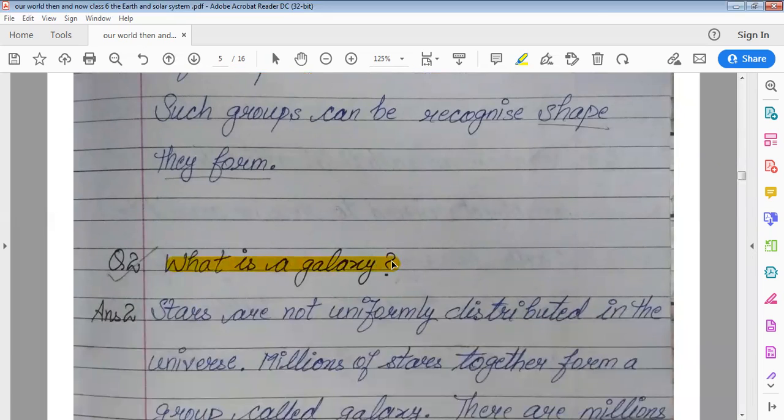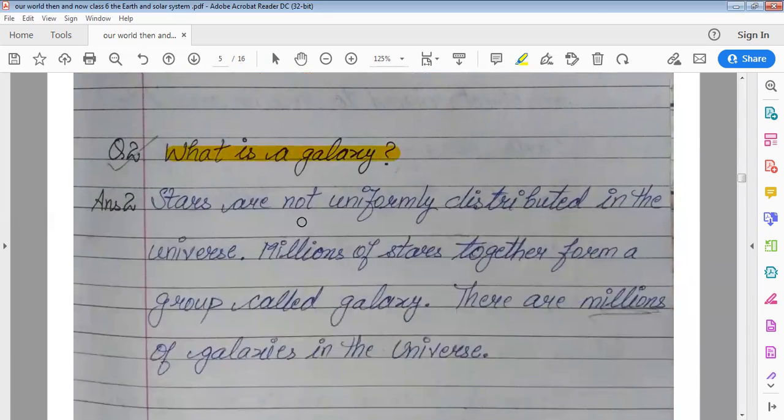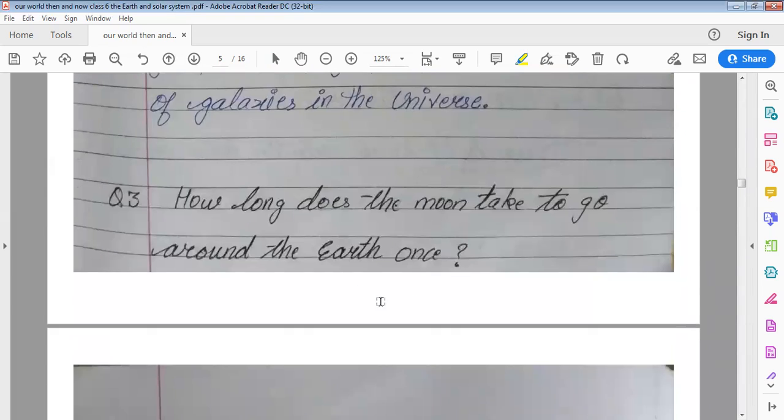What is a galaxy? Stars are not uniformly distributed in the universe. Millions of stars together form a group of stars called galaxy. There are millions of galaxies in the universe. We have already learned about the galaxy, Milky Way galaxy.